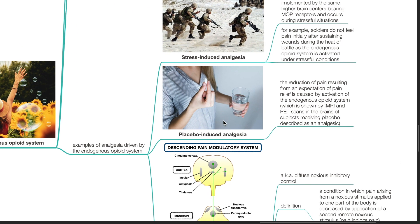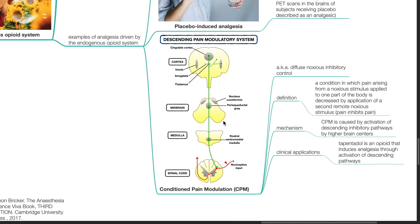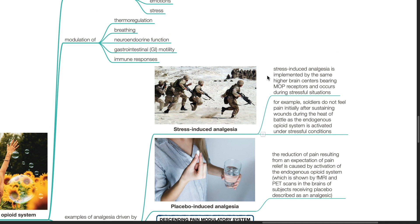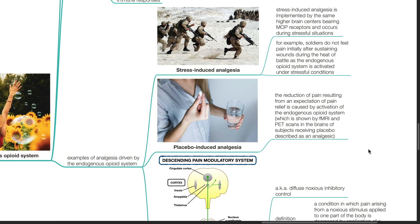Stress-induced analgesia is implemented by the same higher brain centers bearing MOP receptors and occurs during stressful conditions. For example, soldiers do not feel pain initially after sustaining wounds during the heat of battle as the endogenous opioid system is activated under stressful conditions. Regarding placebo-induced analgesia, the reduction of pain resulting from an expectation of pain relief is caused by activation of the endogenous opioid system, which is shown by fMRI and PET scans in the brains of subjects receiving placebo described as an analgesic.